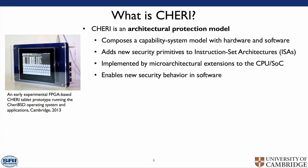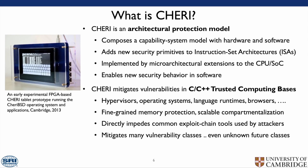What is CHERI? CHERI is an architectural protection model that composes a capability system model with hardware and software. It adds new protection primitives to the instruction set architecture. It is implemented by micro-architectural extensions to a CPU and enables new security behaviour in software. It is added to the instruction set for efficiency, meaning we can reason about it and perform instructions atomically. CHERI mitigates vulnerabilities in C and C++ trusted computing bases — including hypervisors, operating systems, language runtimes, and browsers — providing fine-grained memory protection and scalable compartmentalisation. It directly impedes common exploit-chain tools and mitigates many vulnerability classes, even potential unknown classes.